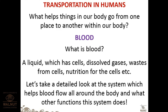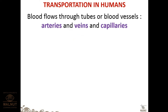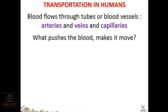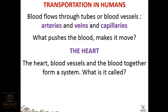Let's look at the system that helps blood flow around the body. Blood flows through blood vessels — there are three types: arteries, veins, and capillaries. What pushes the blood and keeps it transporting minerals and necessary things to all parts of the body? The heart. The heart, blood vessels, and blood together form the circulatory system.